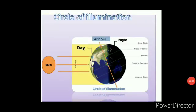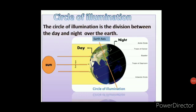Circle of Illumination is the division between the day and night over the earth. As you can see in the picture, the orange line over the earth denotes the earth's axis. The region which faces towards the sun is called day, and the region which is away from the sun is called night.